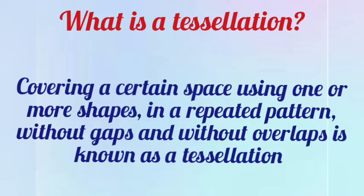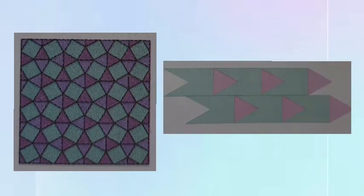Covering a certain space using one or more shapes in a repeated pattern without gaps and without overlaps is known as a tessellation. These are some examples of beautiful tessellations. In these figures you can observe there are no gaps or no overlaps.